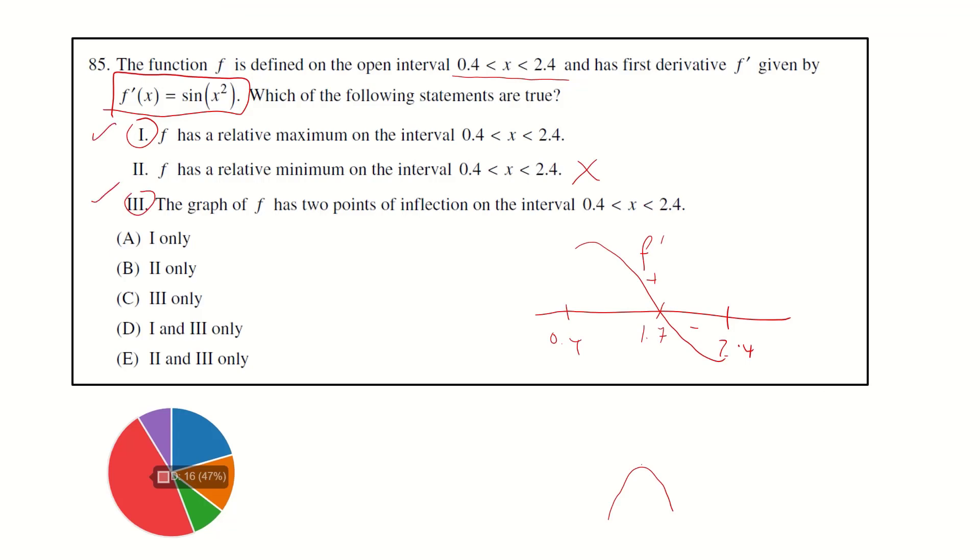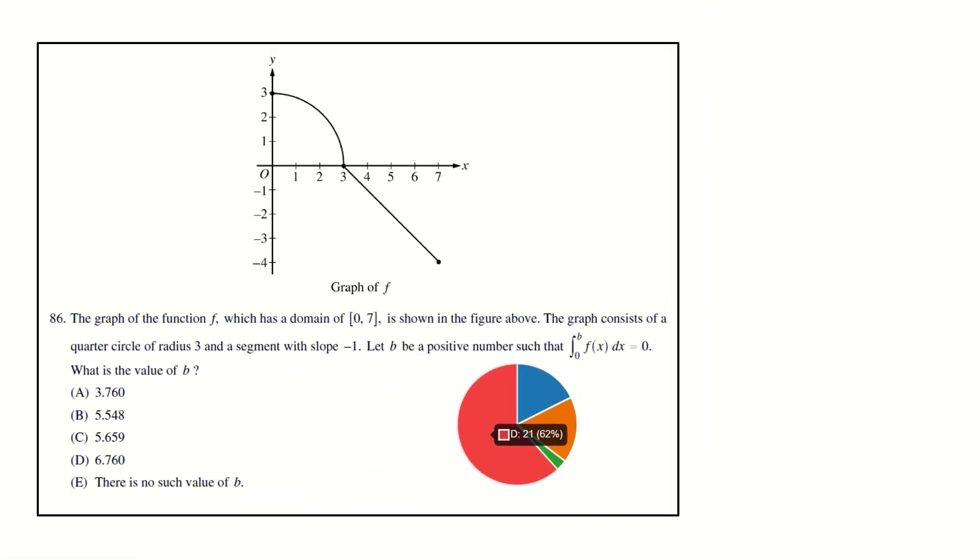Next, the graph of function f has domain from 0 to 7. The graph consists of a quarter circle of radius 3 and a segment with slope negative one. Let b be the positive number such that the integral from 0 to b of f(x) dx equals 0. From 0 to 3, f(x) dx equals pi r squared over 4, that is 9 pi over 4.